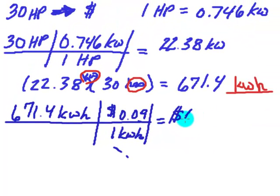So when I multiply my 671.4 kilowatts by nine cents, I find out that it costs me about $60.43 to run that pump for 30 hours. Now you can actually do this all in one big step if you want to, if that's kind of the way that you think about it.